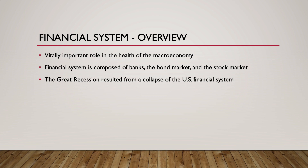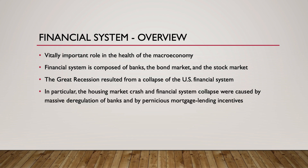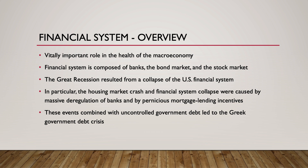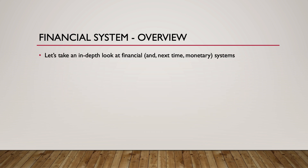The Great Recession of 2007 to 2008 was a global recession that began in the U.S. as a result of a collapse of the financial system. In particular, the crash of the housing market and the collapse of the financial system were caused by massive deregulation of banks and by pernicious mortgage lending incentives created by the U.S. federal government in the decade leading up to 2007. It was these events, along with an uncontrolled level of government debt, that led to the Greek government debt crisis of 2009 to 2019. In this lecture, we will take an in-depth look at financial systems.